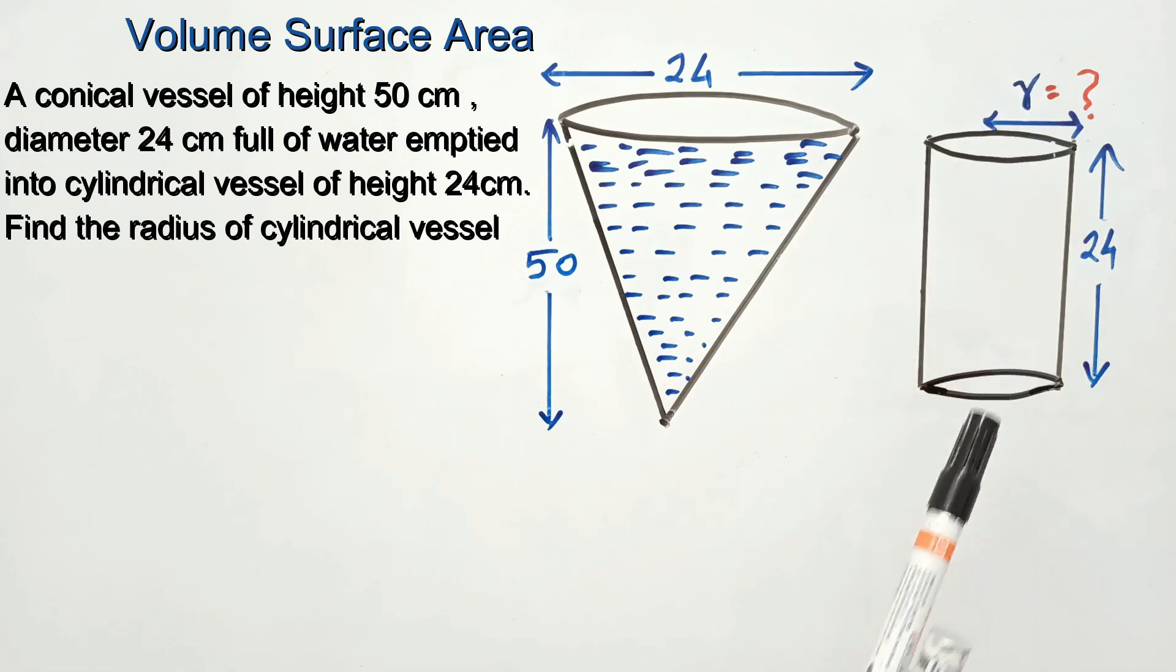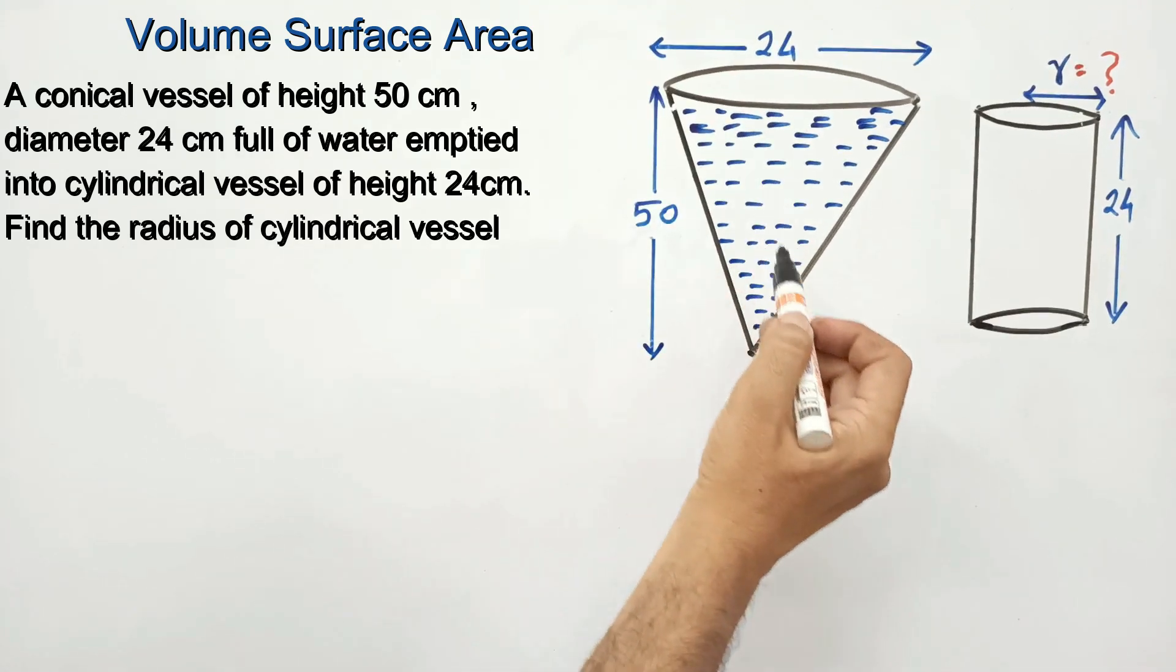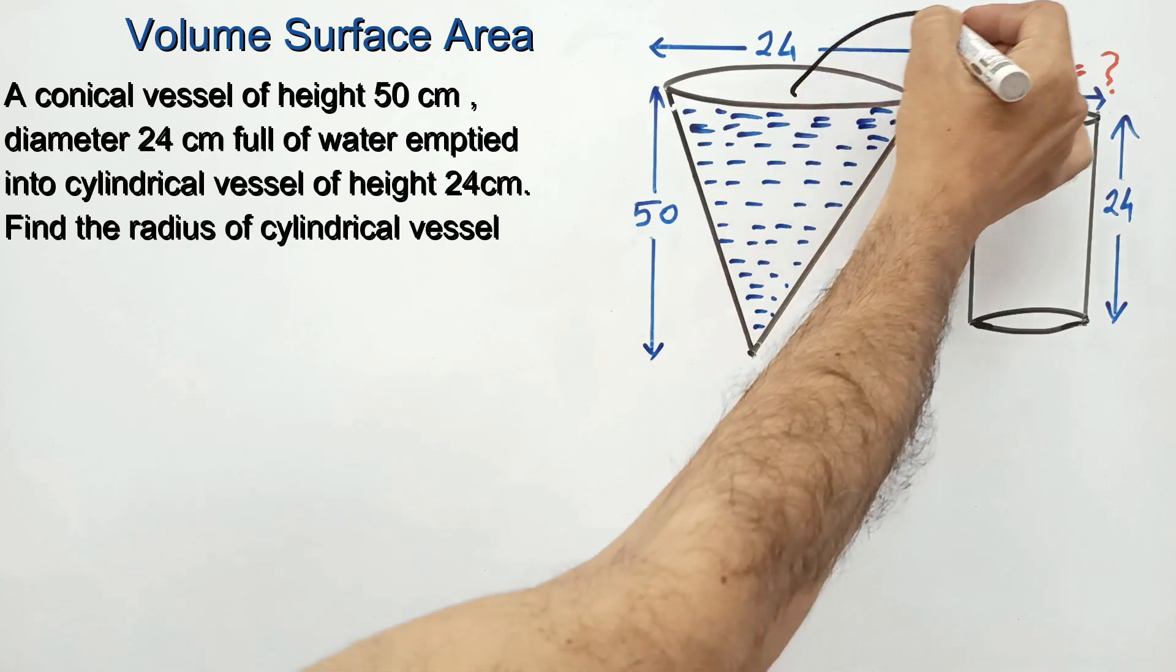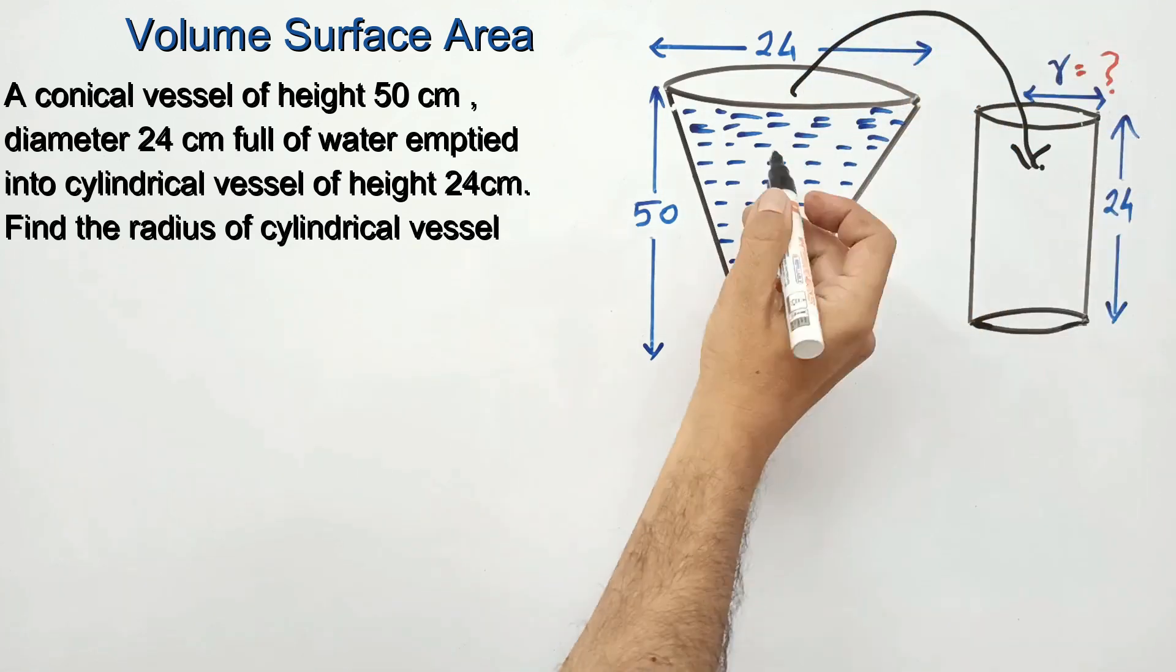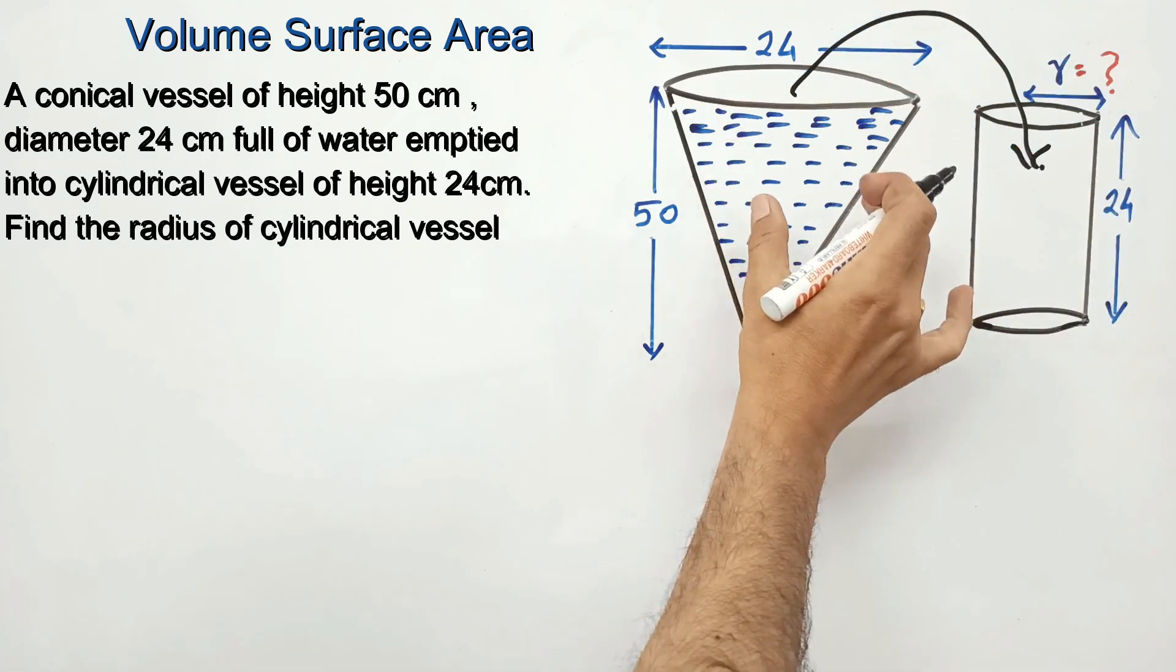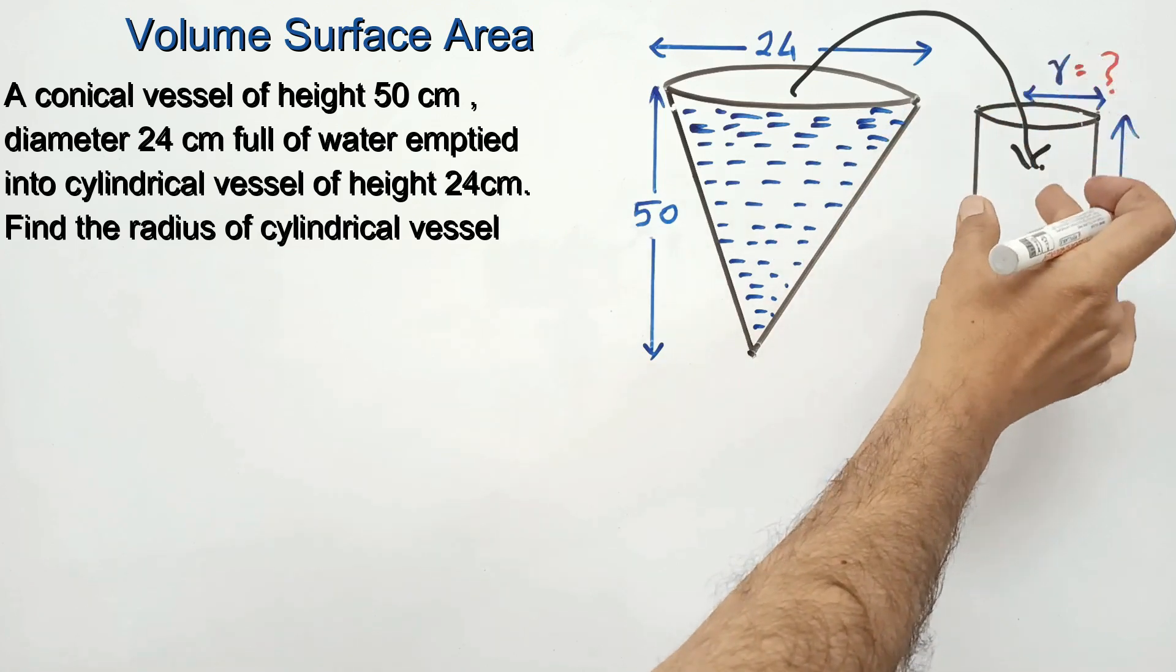find the radius of the cylindrical vessel. For students, this is a volume conversion question. The full water is to be emptied into the cylinder, so the volume of water in the conical vessel is equal to the volume of water